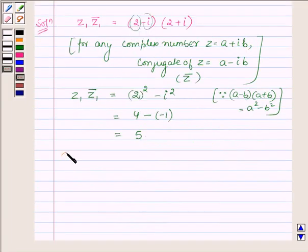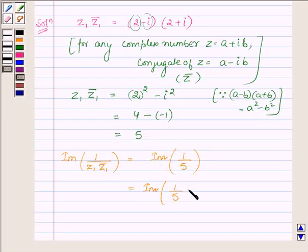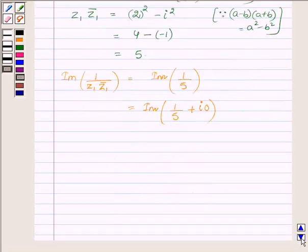Now according to the question we have to find out the imaginary part of 1/(Z1·Z̄1), that is the imaginary part of 1/5. Now 1/5 in the complex form can be written as 1/5 + i·0, and the imaginary part of this complex number is 0.